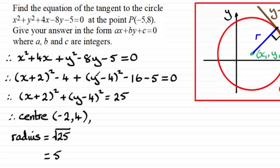And then I subtracted that 5. And then when I simplified it, I got this form of the equation and I could see that the centre was at negative 2, 4 and the radius was the square root of 25. OK, giving us 5.